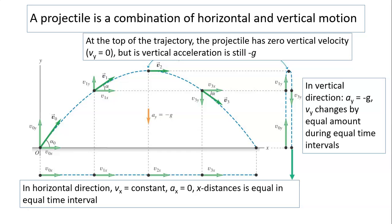So at the top of the trajectory, the projectile has zero vertical velocity, v-y equals zero, but its vertical acceleration is still negative g. It's almost negative 10 or negative 9.8 to be exact.